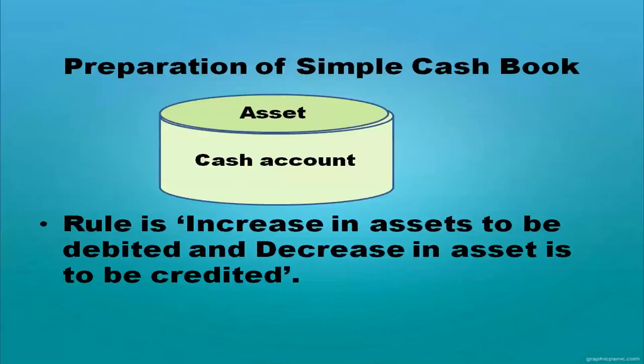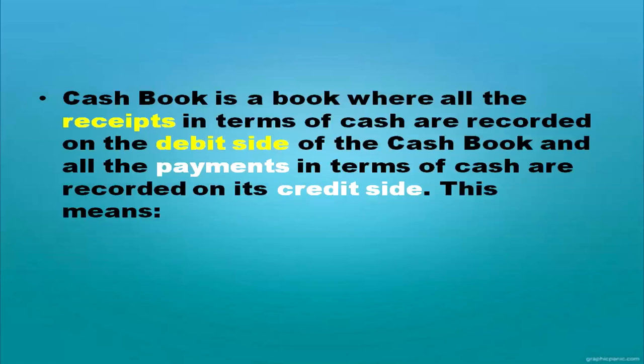Which rule do you follow while recording cash? Cash comes under the asset account. The rule for the asset account is: increase in asset will be debited and decrease in asset will be credited. Cash book is a book where all receipts are recorded on the debit side and all payments are recorded on the credit side. Receipts means cash receipts; payments means cash payments.